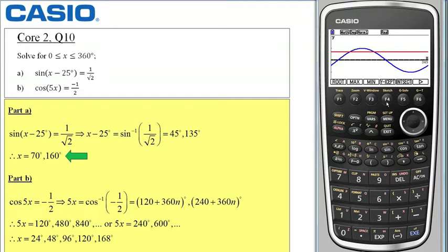So I select f4 if I wanted the y intercept but in this case I just want the intersection so that is f5. And the first point is x equals 70 and remember this is in degrees so that corresponds to this value. And if I scroll to the right I get x equals 160 degrees which is the second value. So the Casio graphical calculator confirms the same answers as I obtained in part A.